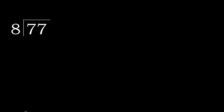77 divided by 8. 7 is less, therefore next. 77 is not less, therefore with 77. 8 multiplied by which number is nearest to 77 but not greater? 8 multiplied by 9 is 72. 72 is not greater. 77 minus 72 is 5.